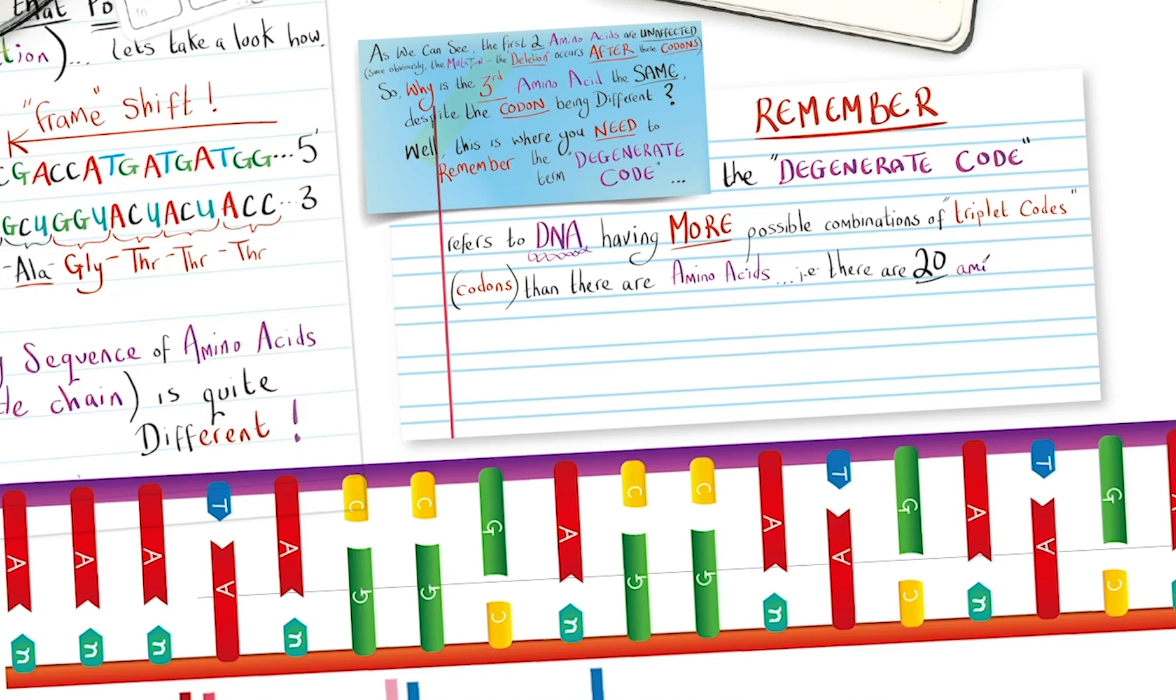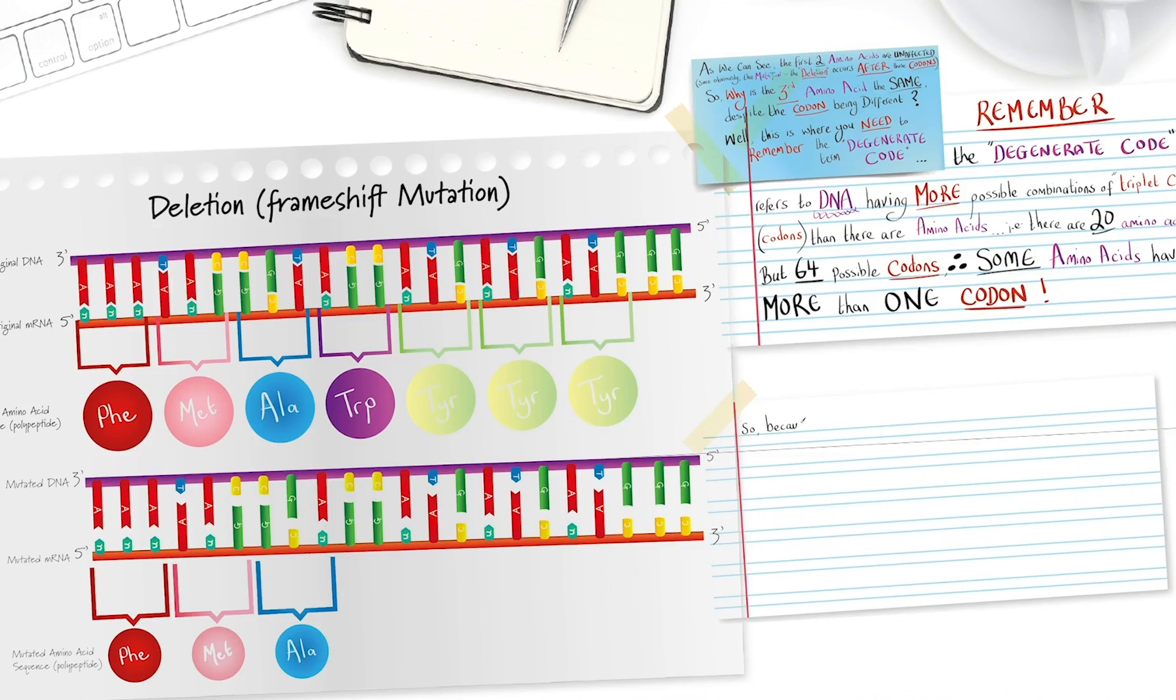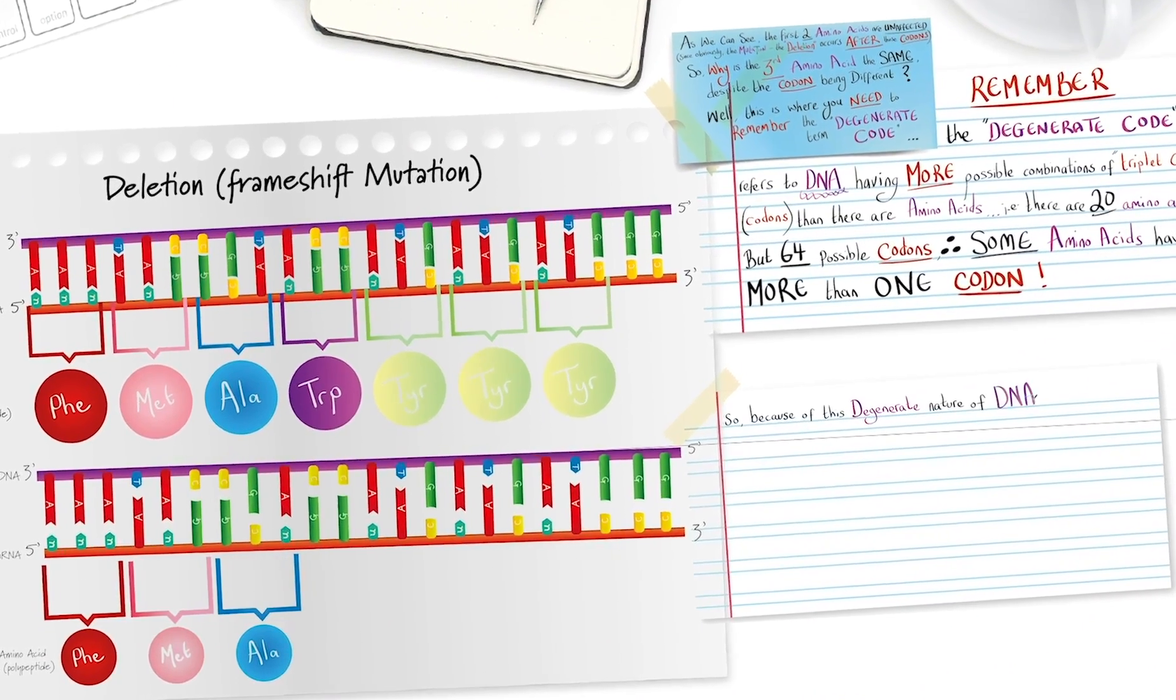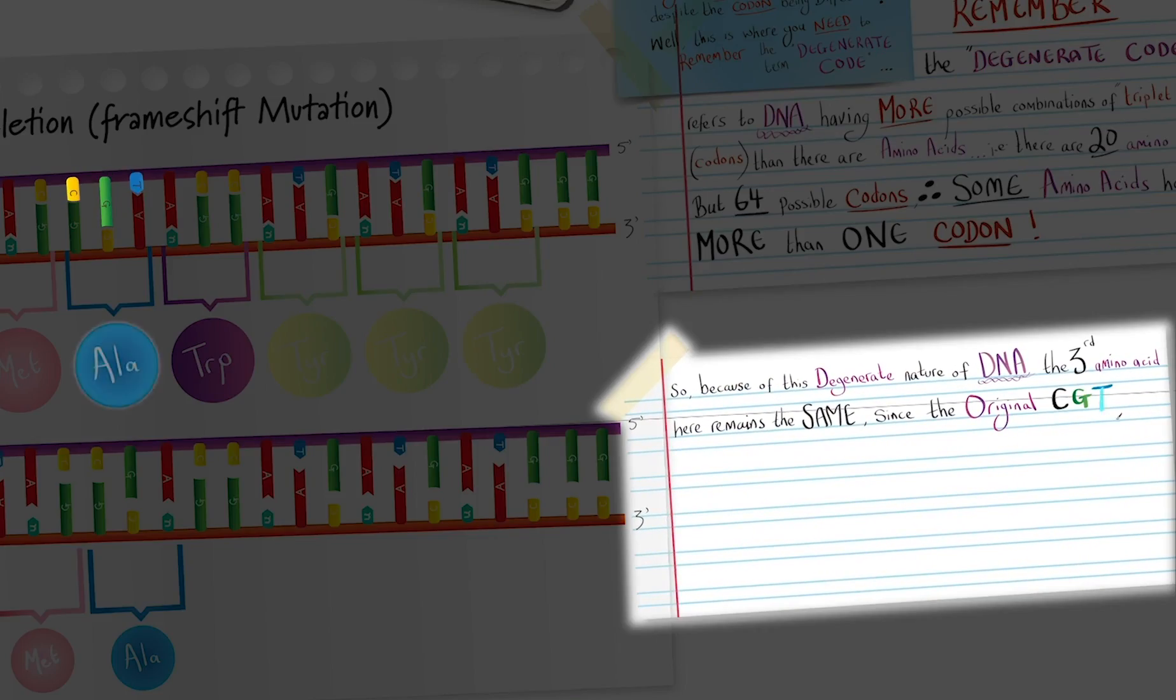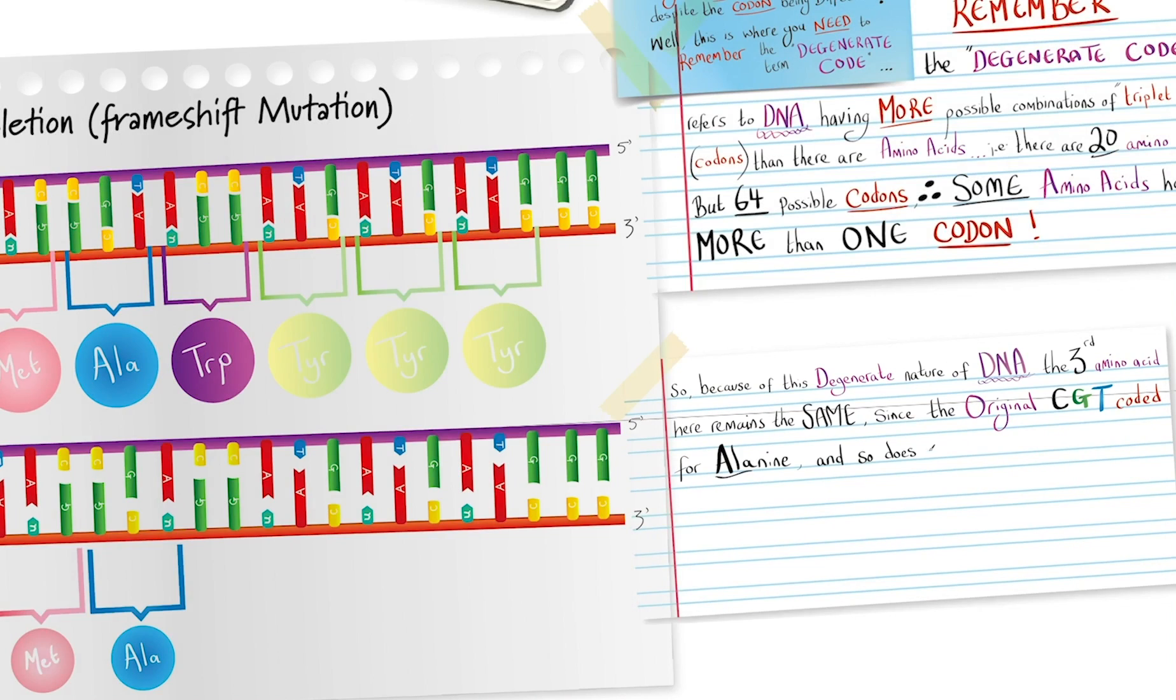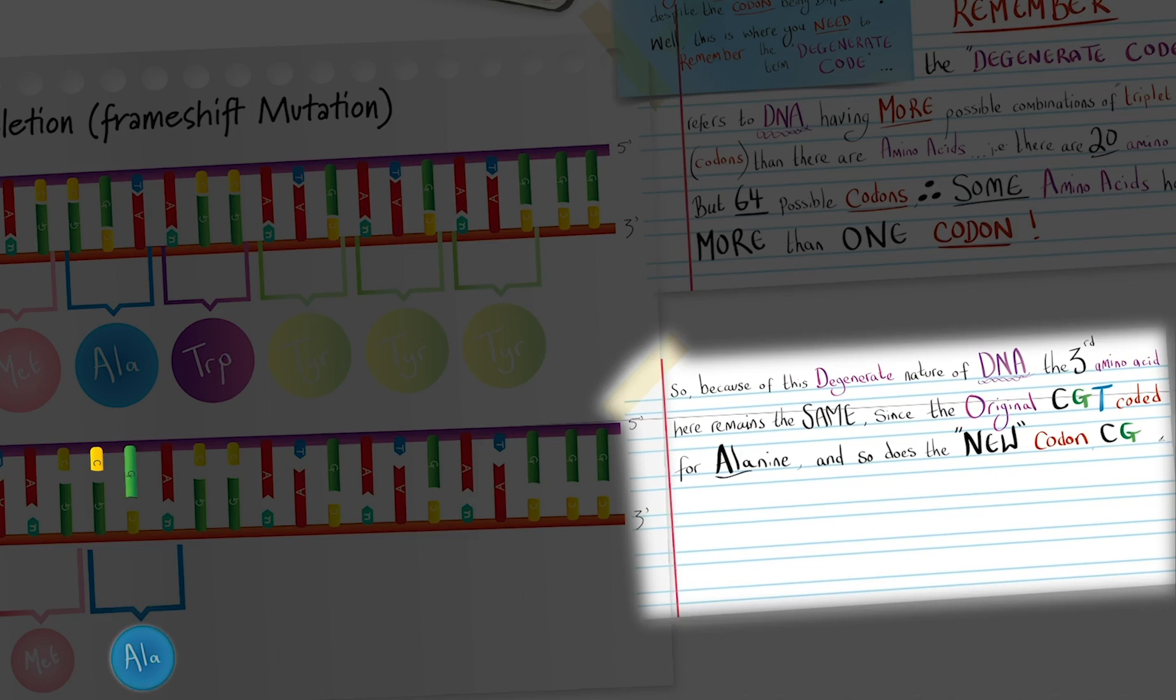That is, there are 20 amino acids, but 64 possible codons. Therefore, some amino acids have more than one codon. So, because of this degenerate nature of DNA, the third amino acid here remains the same, since the original CGT coded for alanine, and so does the new codon, CGA.